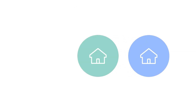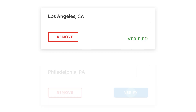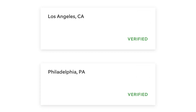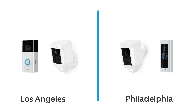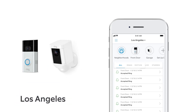If you monitor multiple properties, you may find the locations feature useful. Each address you verify is established as a location, and the Ring devices at each location are grouped together for easy monitoring. This ensures you only see the devices you want to see.